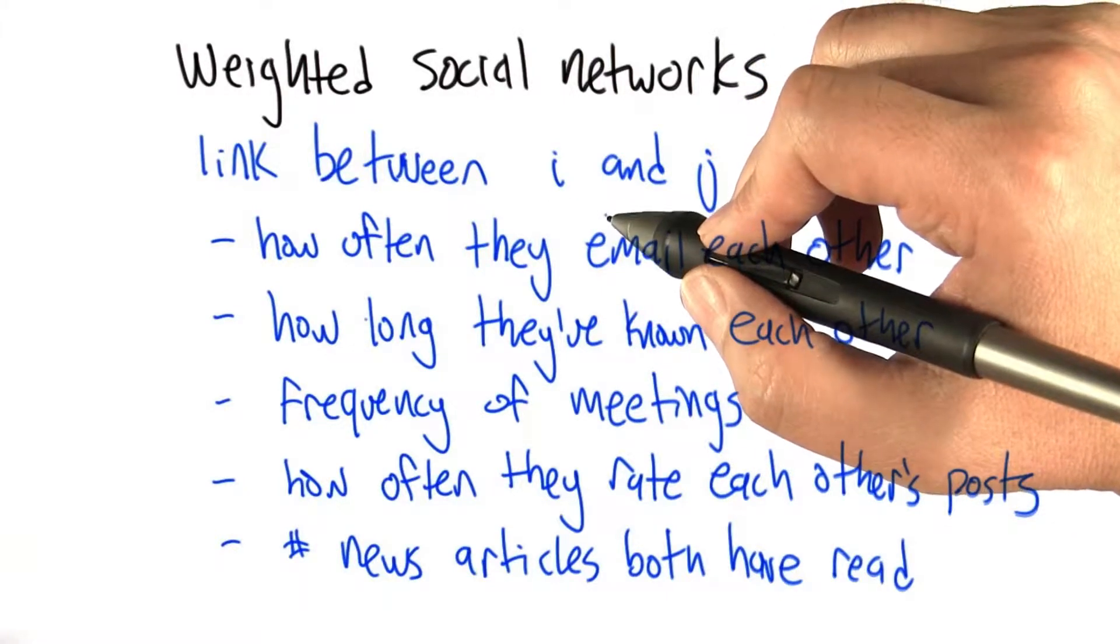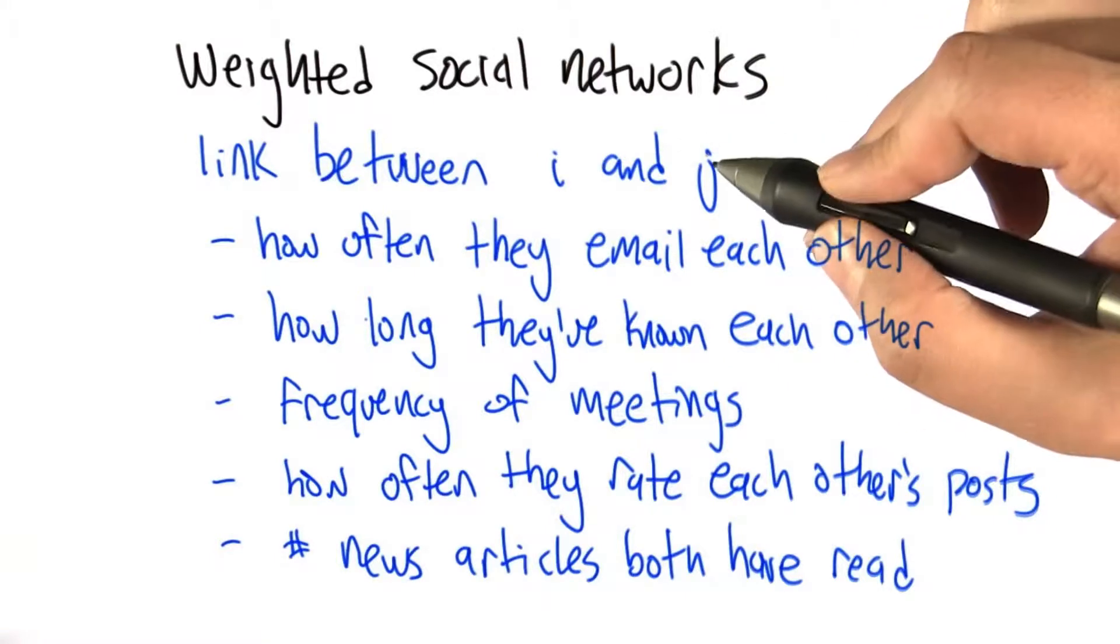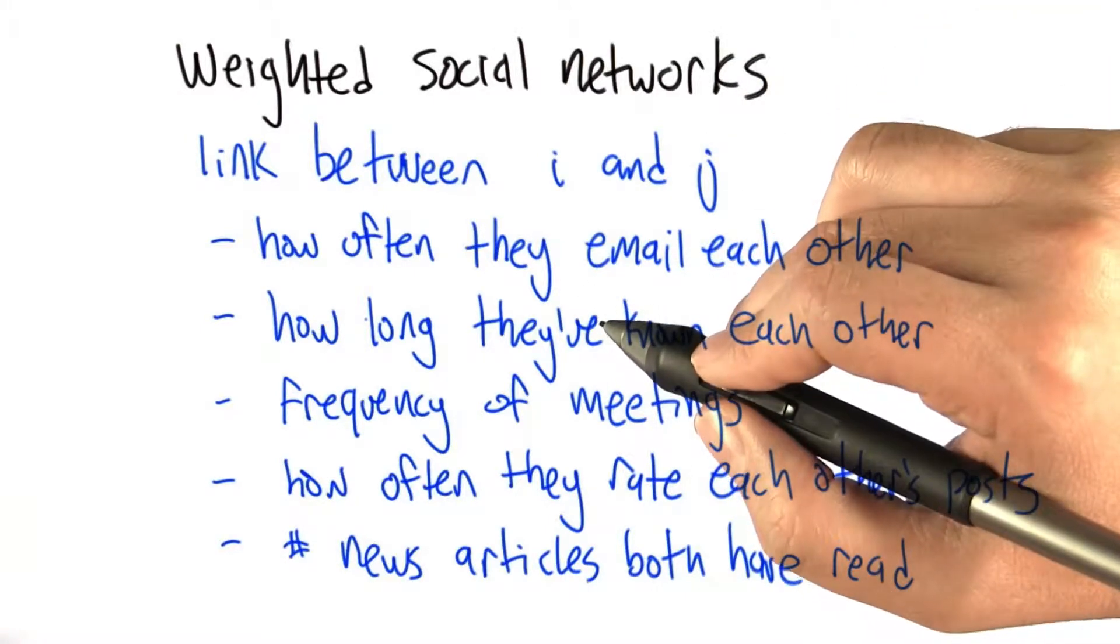In the example we were just talking about with the Marvel comic book characters, the strength of the link between some character I and some character J was the number of comic books they appeared in together.